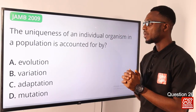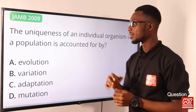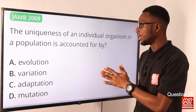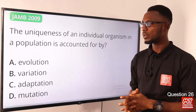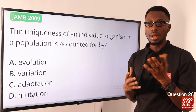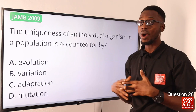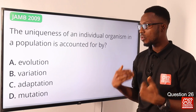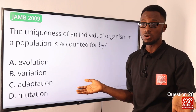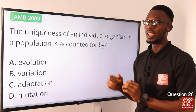Question 26: The uniqueness of an individual organism in a population is accounted for by variation. This uniqueness is one thing that variation does. The effect of variation can be expressed through inherited characteristics or inherited traits, or by acquired traits — that is, by environmental factors or what you inherit. You can further classify variation into physiological variation, morphological variation, continuous, discontinuous, and the likes. The correct option is option B for variation.